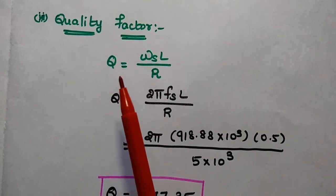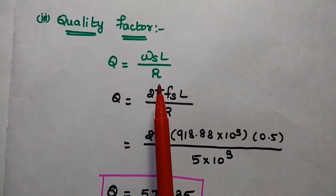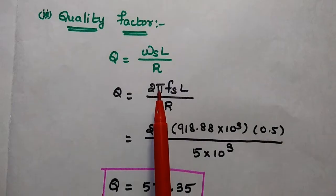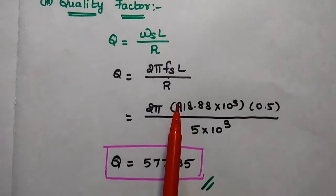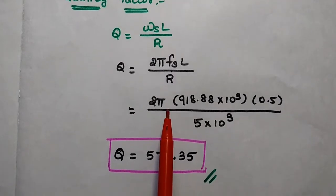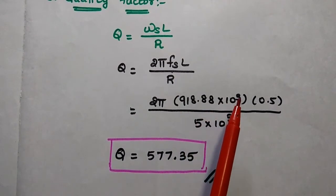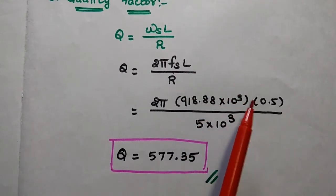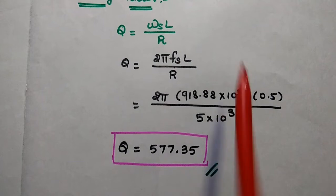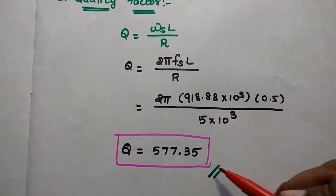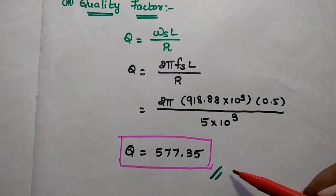Finally, we find the quality factor using Q = ωs·L / R, where ωs = 2π·Fs. Substituting: Q = 2π × 918.88 × 10³ × 0.5 divided by 5 × 10³. We get the quality factor of the crystal oscillator as Q = 577.35.